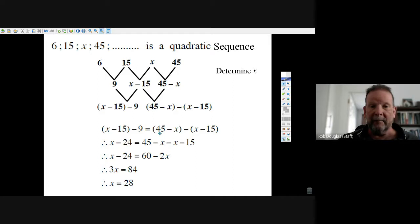And why are we able to let these two things equal each other? Because they're second differences, and the second differences equal each other - that's what makes it a quadratic sequence.